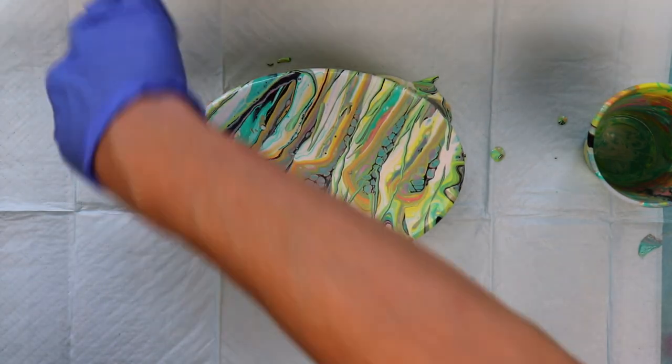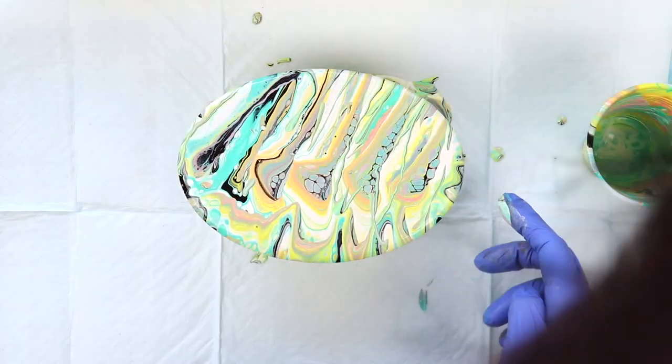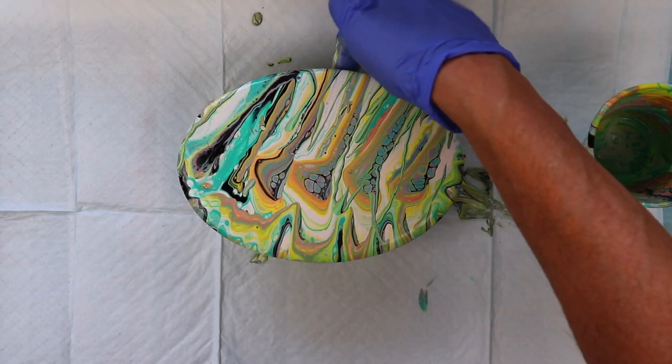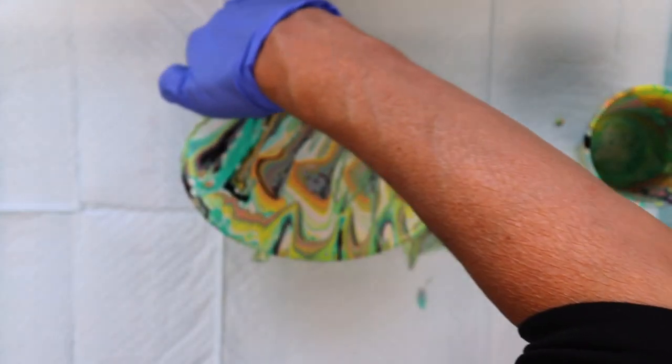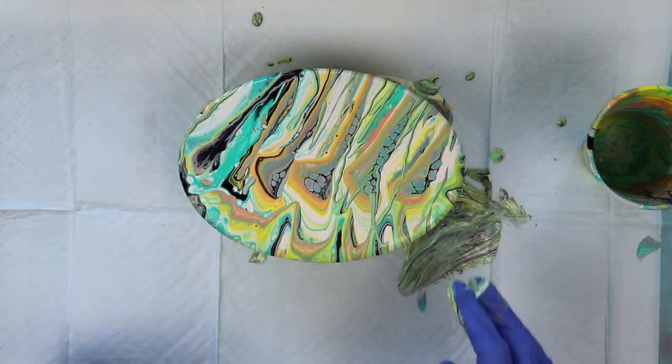Check the sides to make sure everything's covered. So what I'm doing now is I'm taking my finger and going under it and getting the overflow paint that is accumulating along the bottom here.